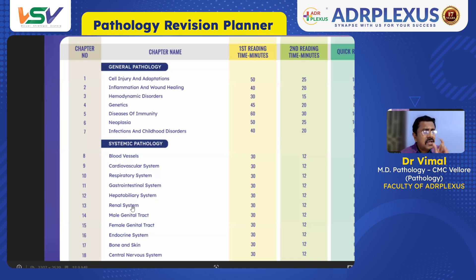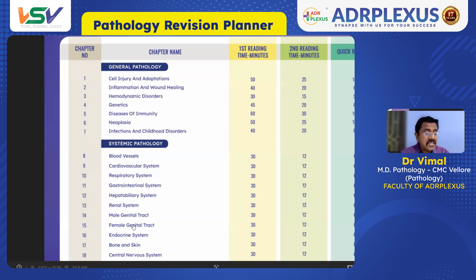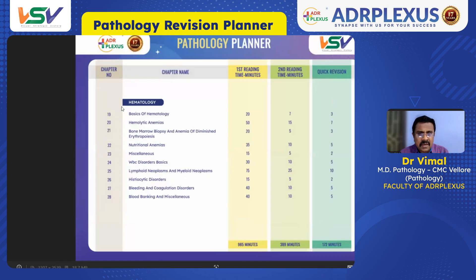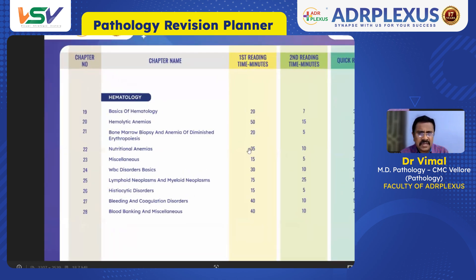For the renal system — very important — cover glomerular diseases, renal cell carcinoma, casts and crystals. Image-based questions from the renal system will appear; in the third revision, on seeing an image you should immediately identify it. Cover the male genital system tumors of the testis, female genital system with carcinoma breast, carcinoma cervix, and ovarian tumors — highly important. For the endocrine system, thyroid tumors and key points about each thyroid carcinoma should be studied in depth in the first revision and reviewed overall in the third.